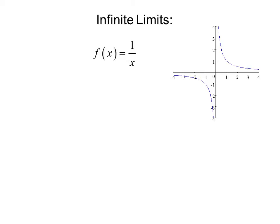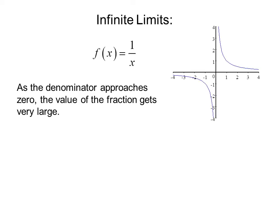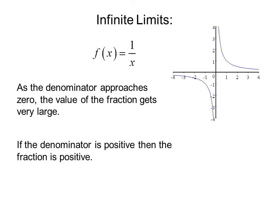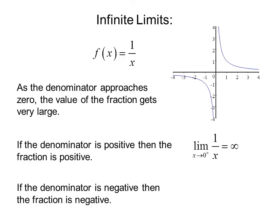Infinite limits. Once again, consider f of x equals 1 over x. As the denominator approaches 0, the value of the fraction gets very large. If the denominator is positive, then the fraction is positive, so the limit as x approaches 0 from the right-hand side of 1 over x equals infinity. If the denominator is negative, then the fraction is negative, and the limit as x goes to 0 from the left-hand side of 1 over x equals negative infinity. We have a vertical asymptote at x equals 0.